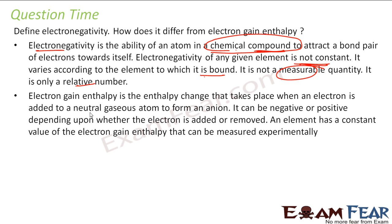But when we talk about electron gain enthalpy, this is nothing but energy required to add an electron to an atom to make it an ion. It can be positive or negative. It can be exothermic or endothermic depending on whether the electron is added.